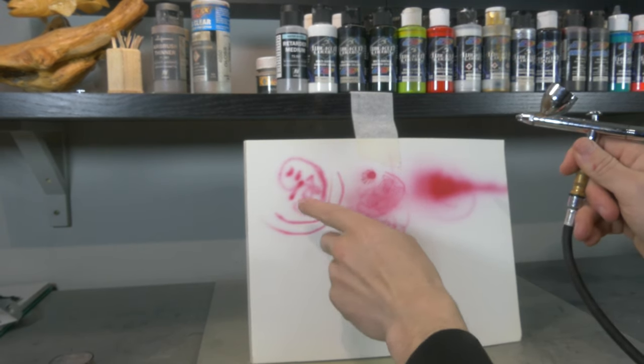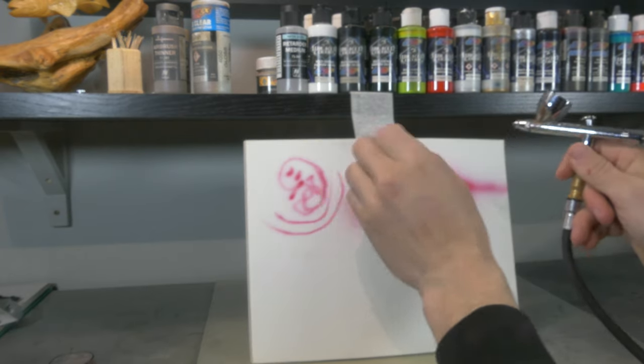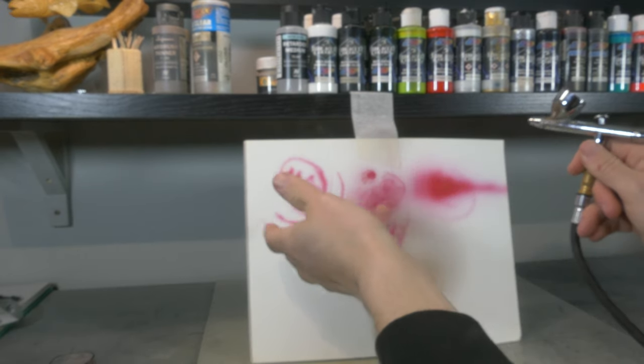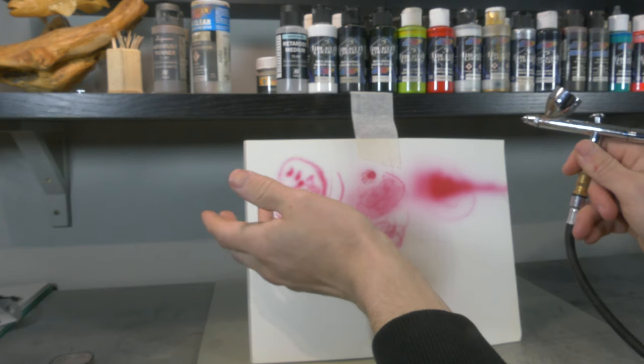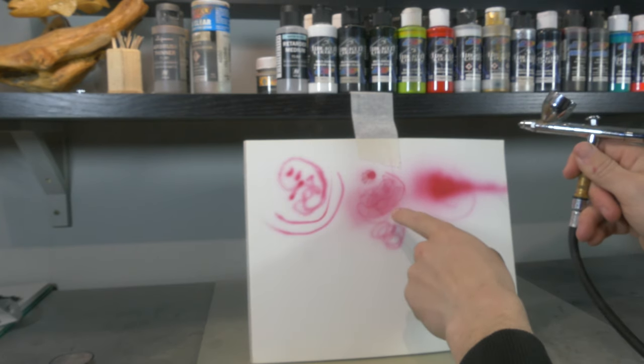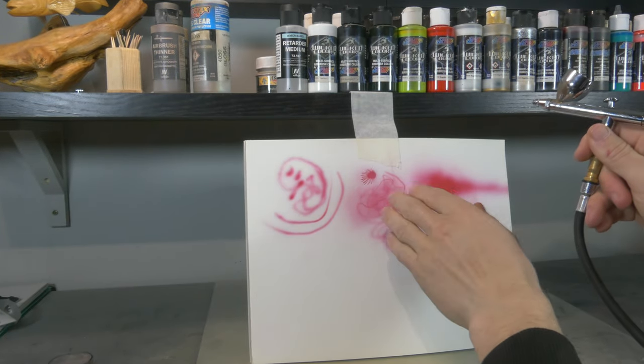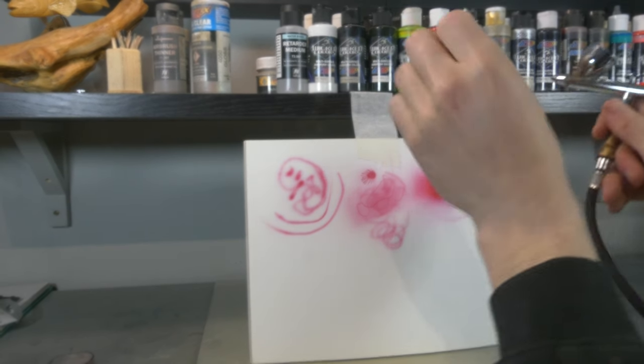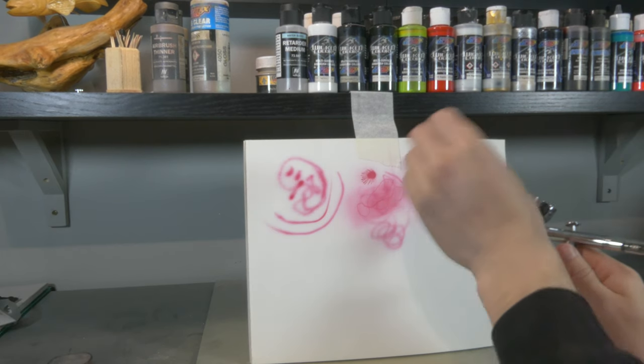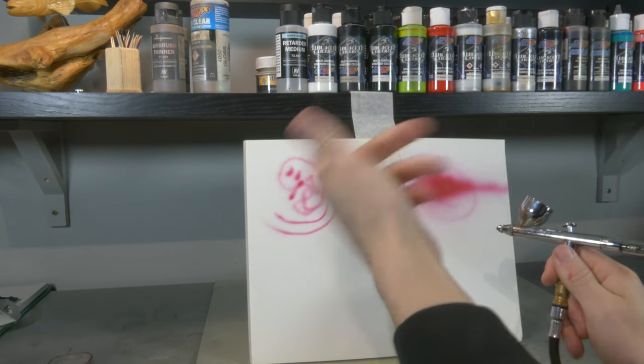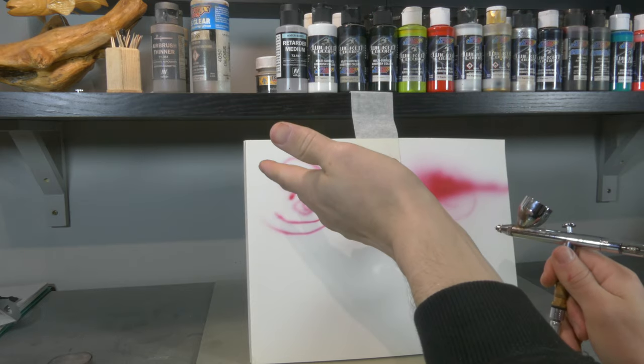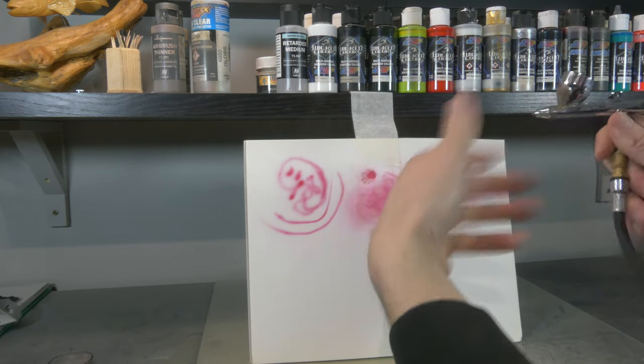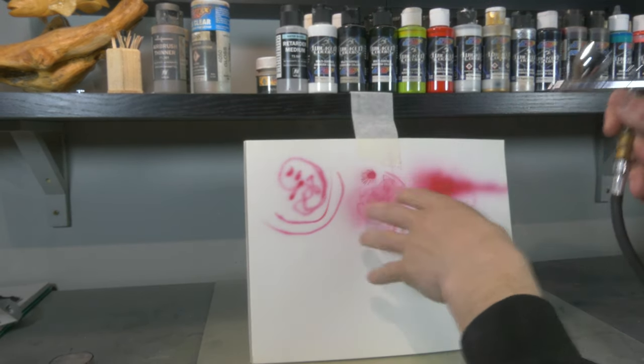When you're using a little bit of reducer, that is great for general painting. If you're using stencils or anything, or you just want to put on really nice colors, it's not too transparent, depending on the paint, because you get transparent opaque paints and semi-opaque paints. That's a different topic.